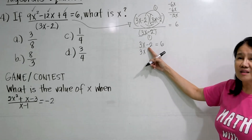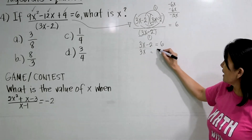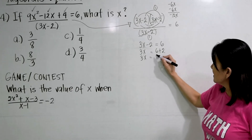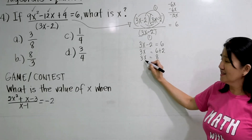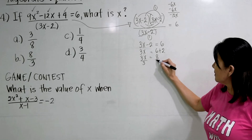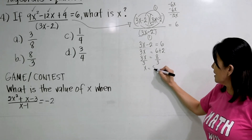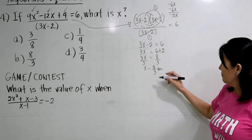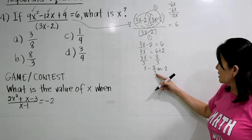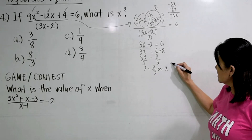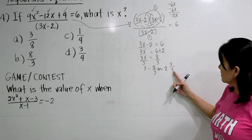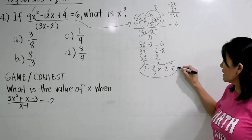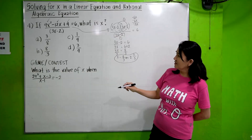Transposing negative 2 to the other side gives 3X equals 6 plus 2 equals 8. To isolate X, divide both sides by 3, so X equals 8 over 3. As a mixed number, 8 divided by 3 is 2 remainder 2, so X equals 2 and 2 thirds. The correct answer is letter B.